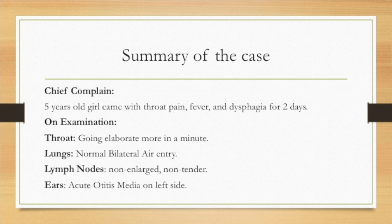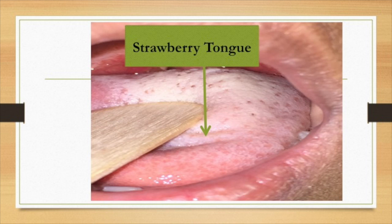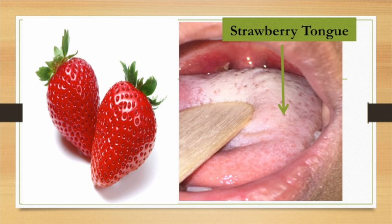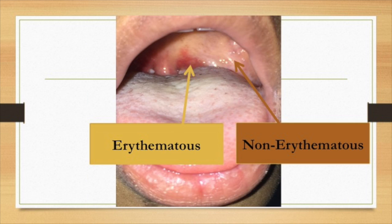In the ears, there was a presence of acute otitis media on the left side. Looking at the throat of the patient, the first finding you will see is the strawberry tongue, which is quite similar to the fruit. The second finding is that the pharynx is erythematous.